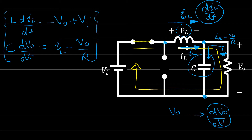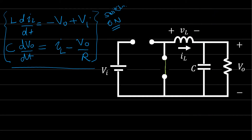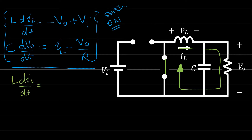Now let's find the same relationship when the switch is off. When the switch is off, the diode is conducting and current flows in this direction. We can find the first derivative for the inductor current and capacitor voltage: L di_L/dt equals zero minus V_out, which is minus V_out.